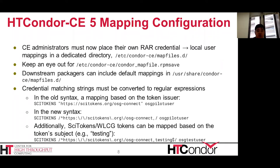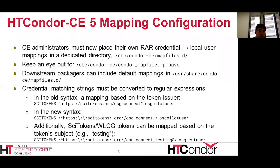We also changed the syntax in these map files — credential matching strings should be converted to regular expressions. In the old syntax, a mapping based on the SciToken issuer has three fields: the first is the Condor authentication method, the second is what Condor sees from the credential (in this case, the token issuer), and the third is the local user the token is mapped to. In the new syntax, that second field should be converted to a regular expression. For tokens, there's a comma before that last slash because Condor can see both the token issuer and the token subject. So in that last example, we are mapping all tokens from the OSG Connect SciTokens issuer, but only if they have the testing token subject.